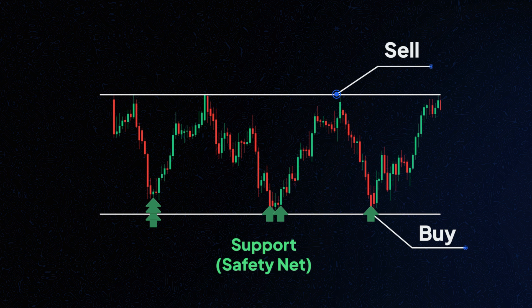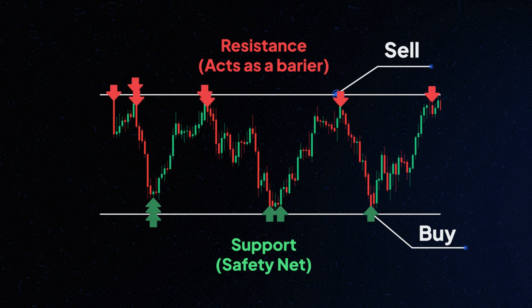Resistance, on the other hand, acts as a barrier, preventing the price from rising higher. It's where sellers step in, creating a ceiling for the price.